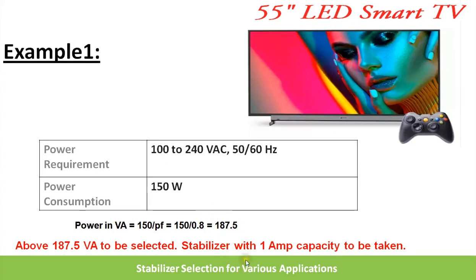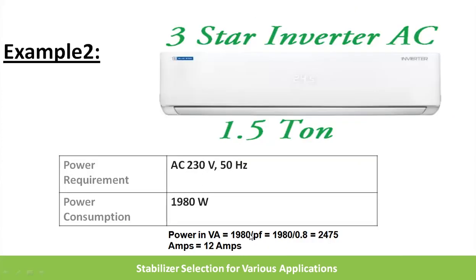Example 2: an AC with a power consumption of 1980 watts. Converting to VA gives approximately 2475 VA. Dividing by 200V (the lower range of the stabilizer output) gives around 12 amps. So a 12-amp rated stabilizer needs to be selected for this air conditioner.